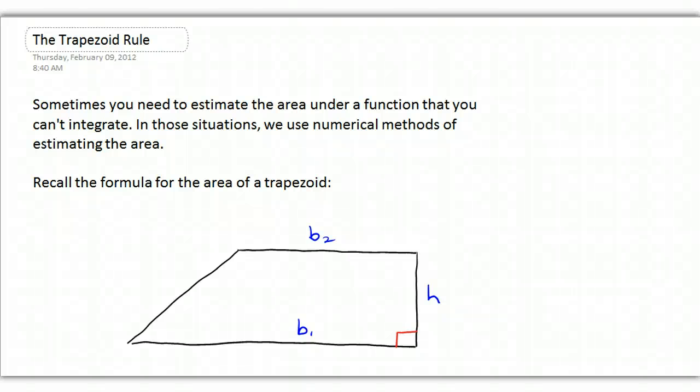Okay, so sometimes when you're trying to evaluate a definite integral to get the area under a function, you just can't do it. You can't find the antiderivative. And in those situations, we use numerical methods of estimating the area. And one of the best numerical methods is called the trapezoid rule.